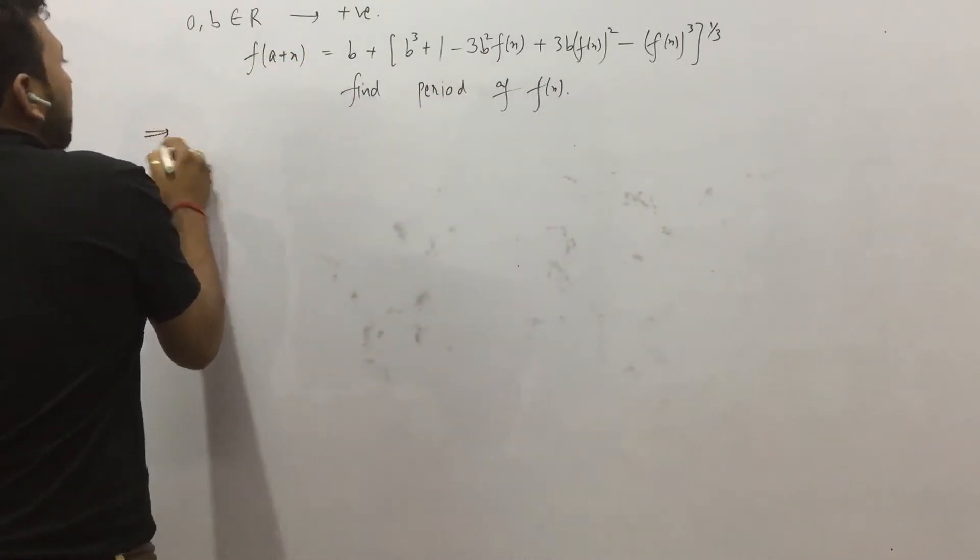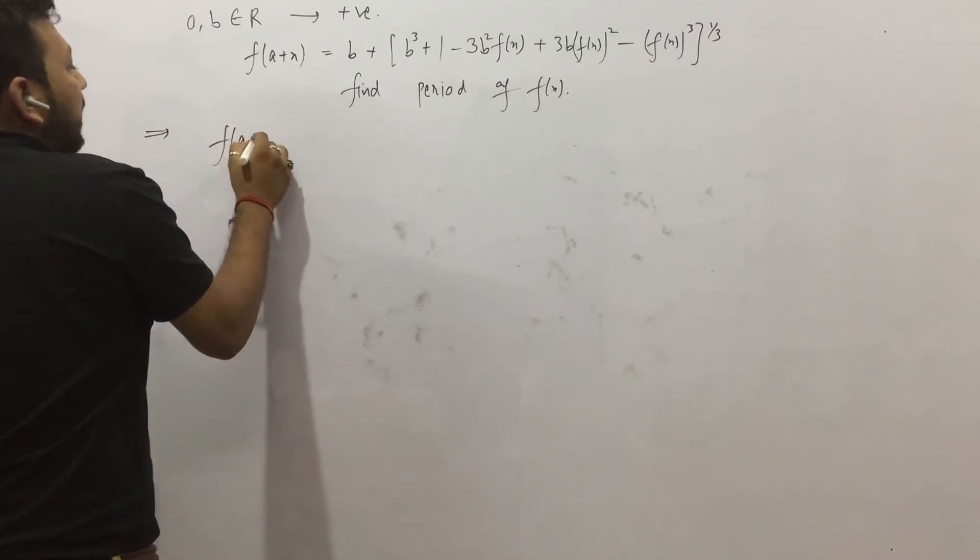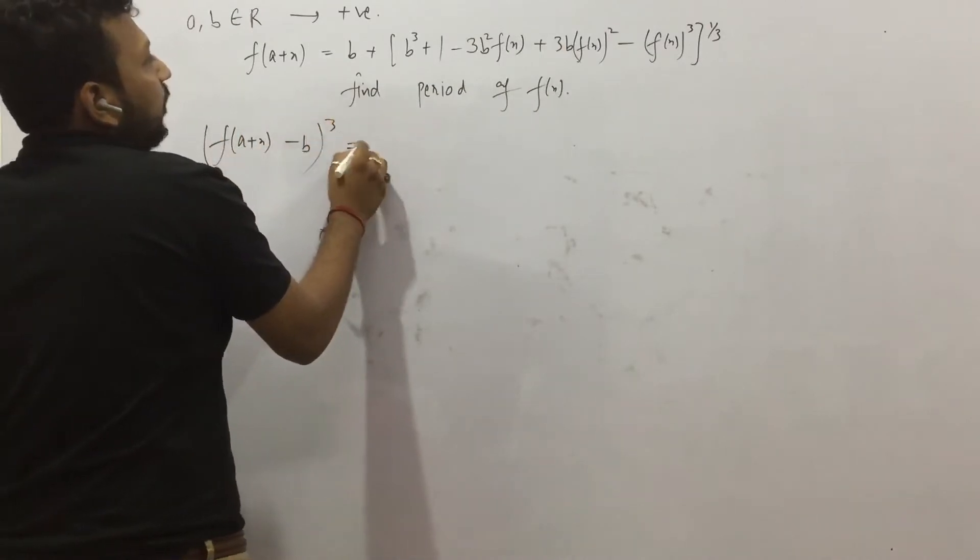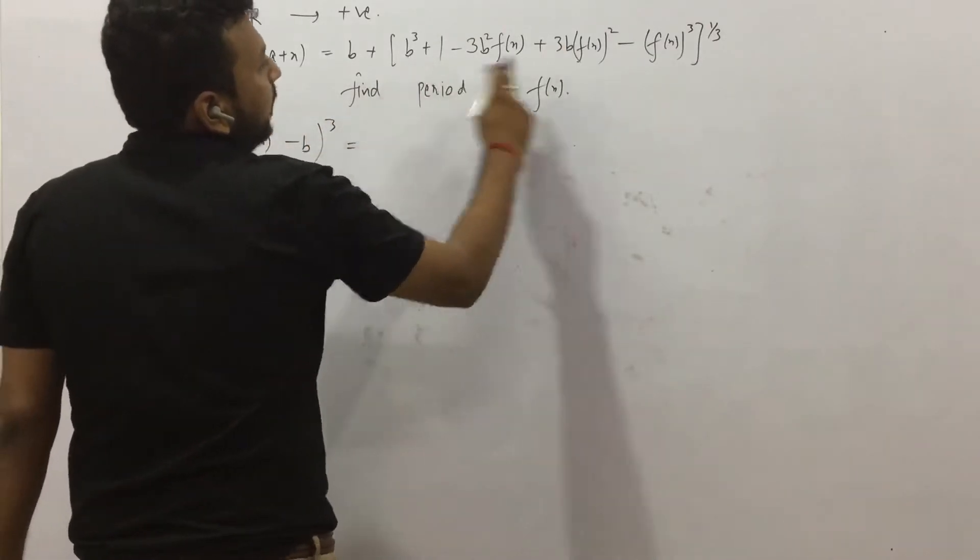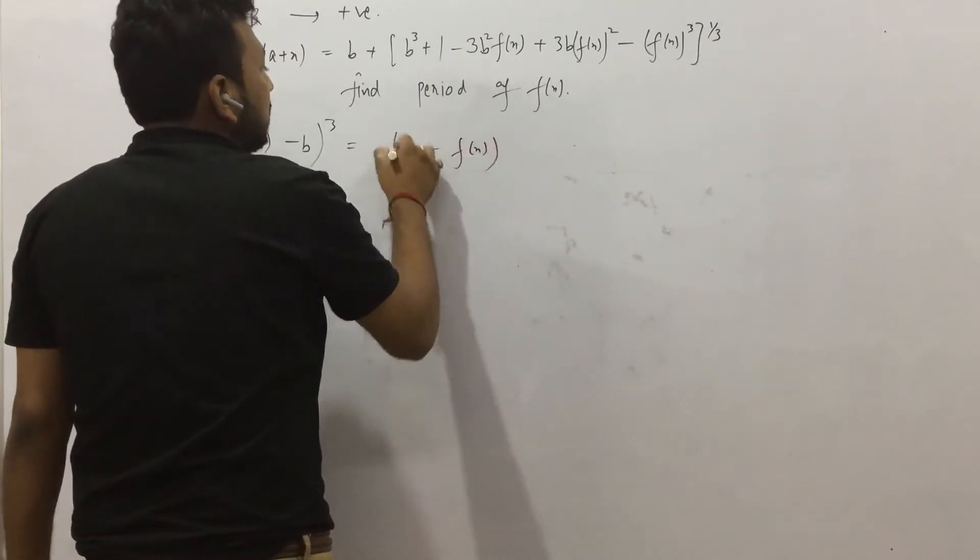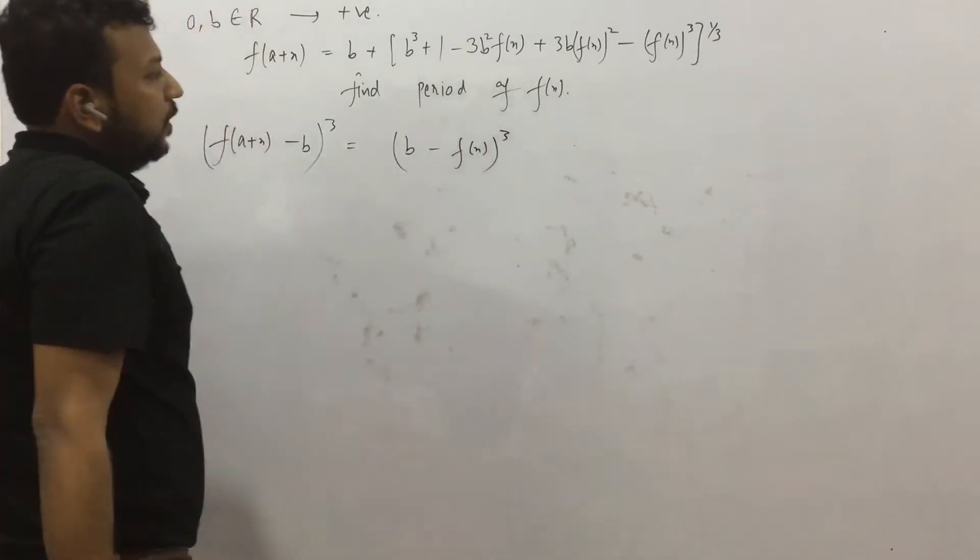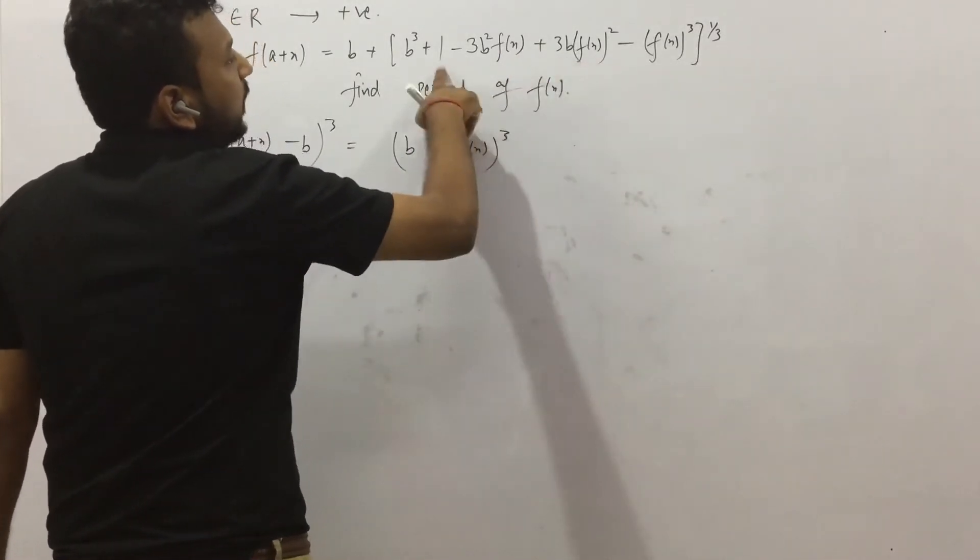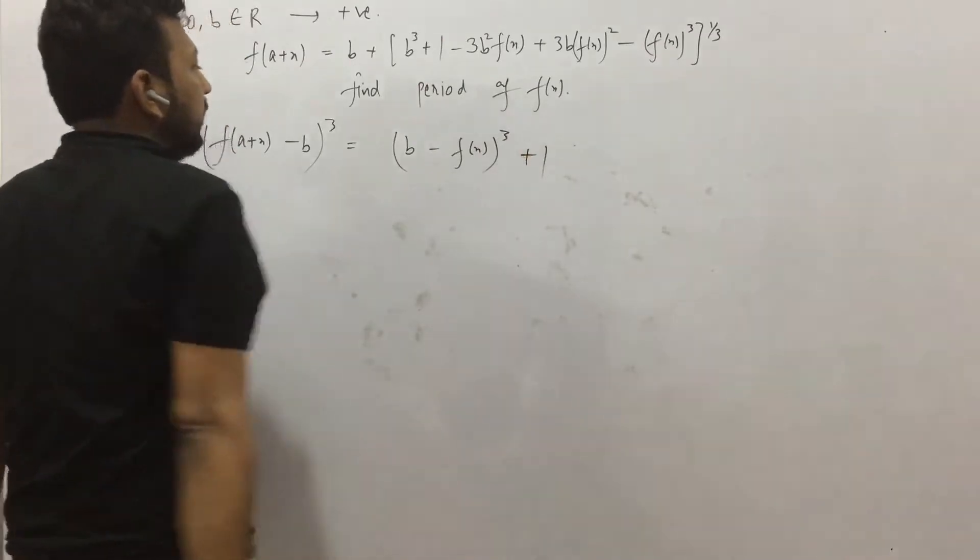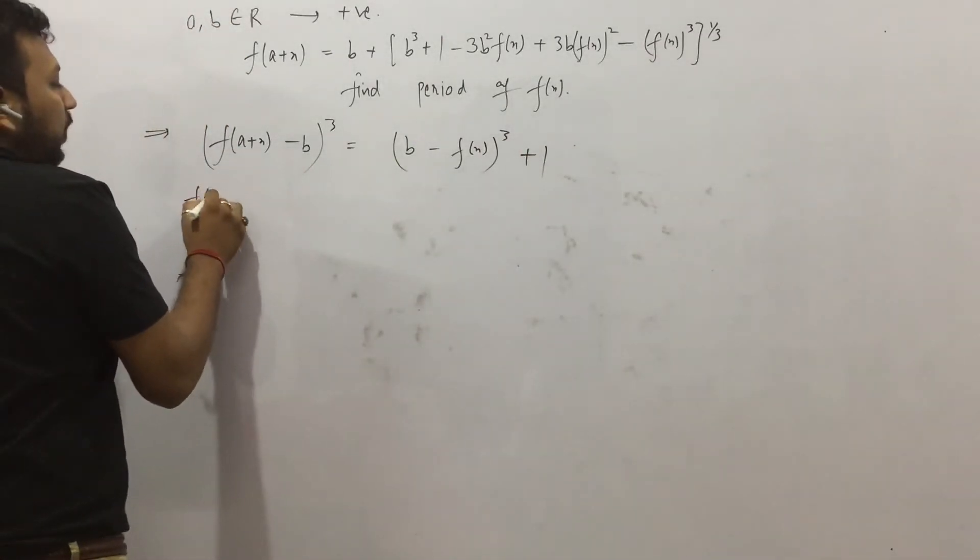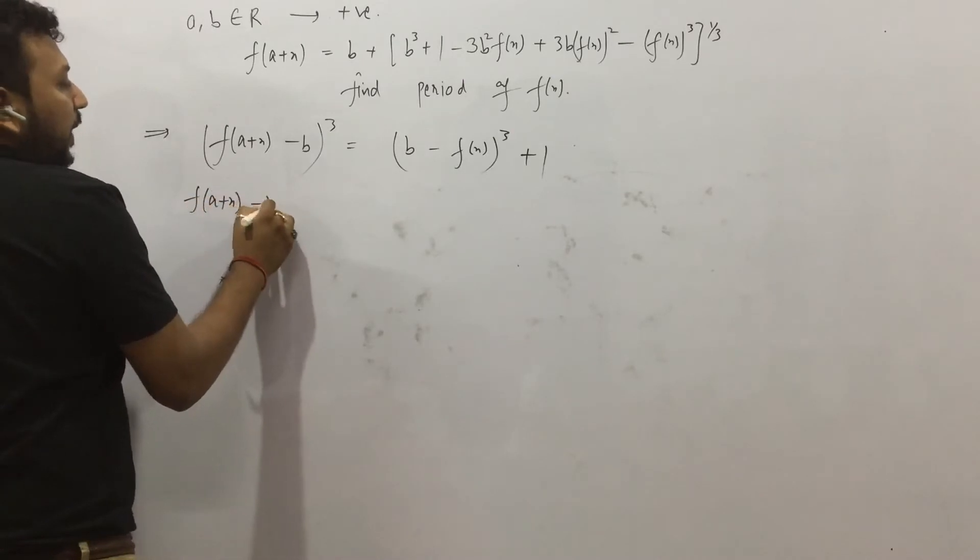What I will do: I will write f(a+x) - b to the cube. What I will get? So I think it is (b - f(x)) whole cube. Let's see: b minus f(x) whole cube. So it is a³ - b³ - 3a²b + 3ab². Here, this is ±1. So I will put it here. I will write f(a+x) - b.